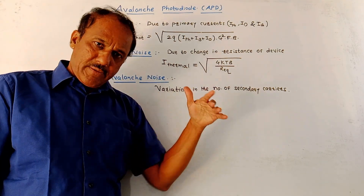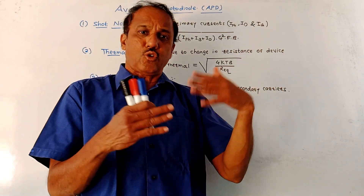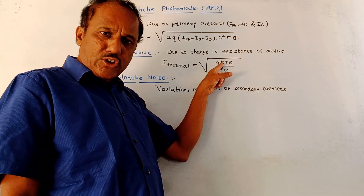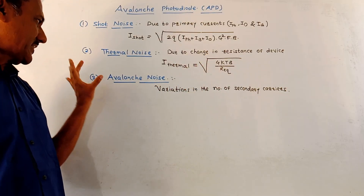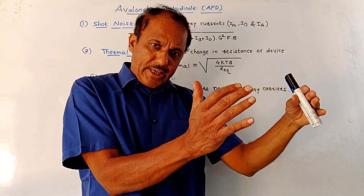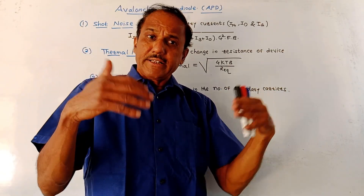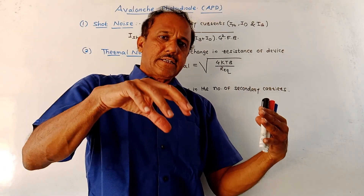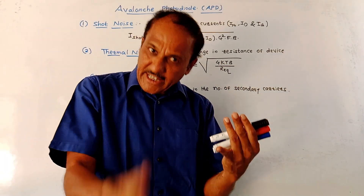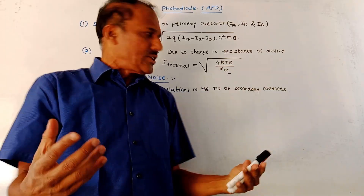Second type of noise is the thermal noise. There may be variations in the resistance of APD due to variations in temperature, and because of these variations noise is created — that is called the thermal noise. It is given as sqrt(4KTB / R_equivalent), where K is Boltzmann's constant, T is the temperature, B is the bandwidth, and R_equivalent is the equivalent resistance. Third and major type of noise is the avalanche noise. Whenever photons fall, electron hole pairs are generated, and these primary electron hole pairs collide with the lattice to create new electron hole pairs. However, the number of these newly generated secondary electron hole pairs is not fixed — there are variations. These variations in the number of secondary charge carriers create the noise called avalanche noise.